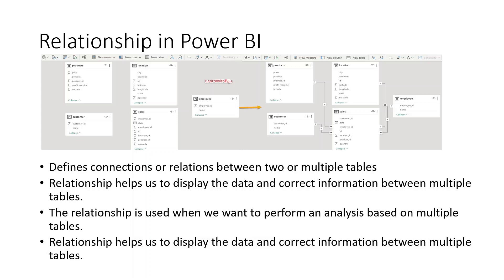Products are in the products table, location is in the location table, employee is in the employee table, customer is in the customer table. But the transactions — the sales — are in the sales table. The sales table is the fact table.